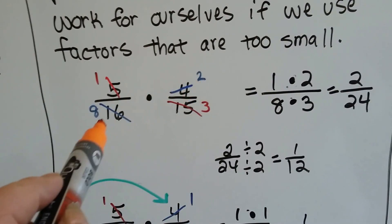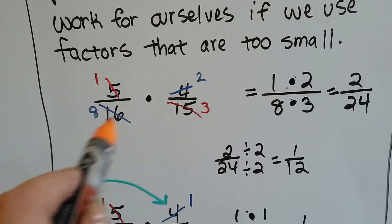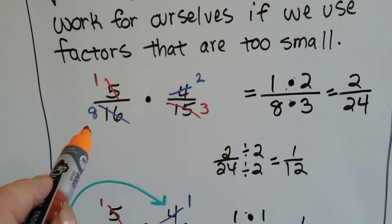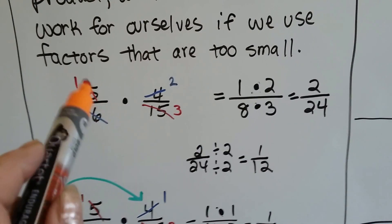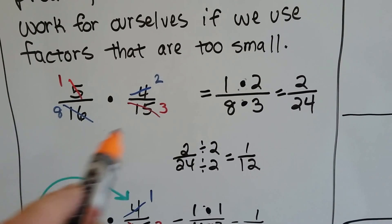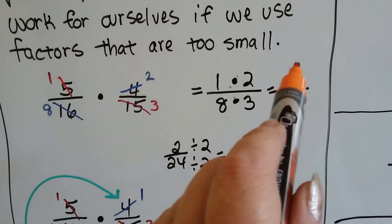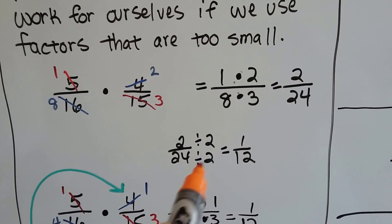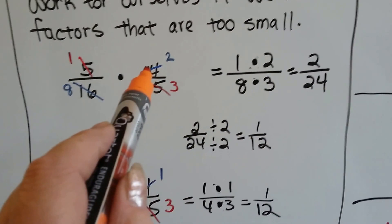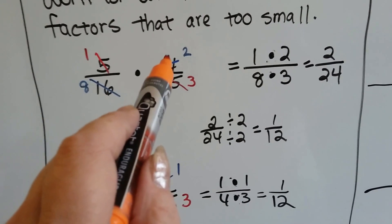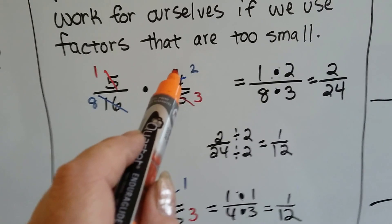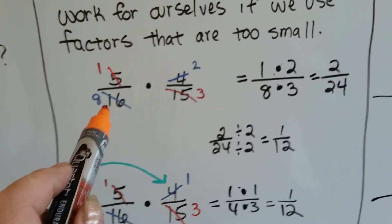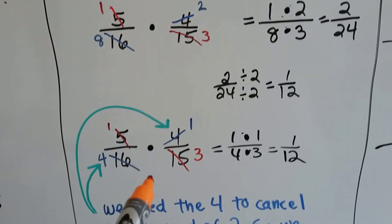If we choose two and eight as cross-products, what's going to happen is we're going to end up with one times two over eight times three, which equals two twenty-fourths. That still needs to be simplified down to one-twelfth. You know why? Because we chose too small of a number. We didn't choose the biggest common factor that we could have. We should have chose four.